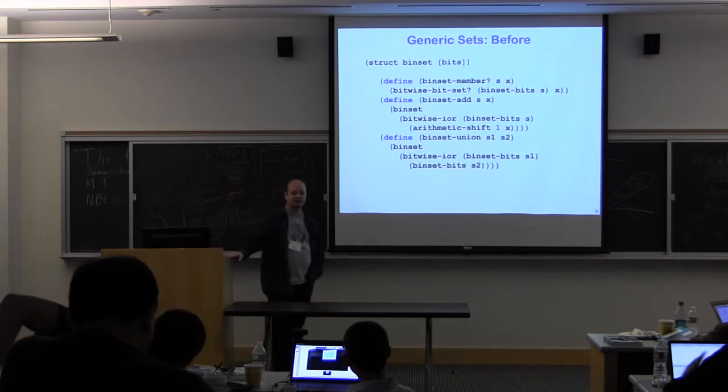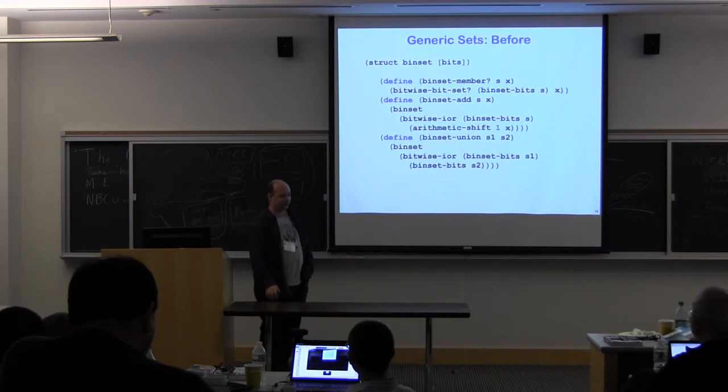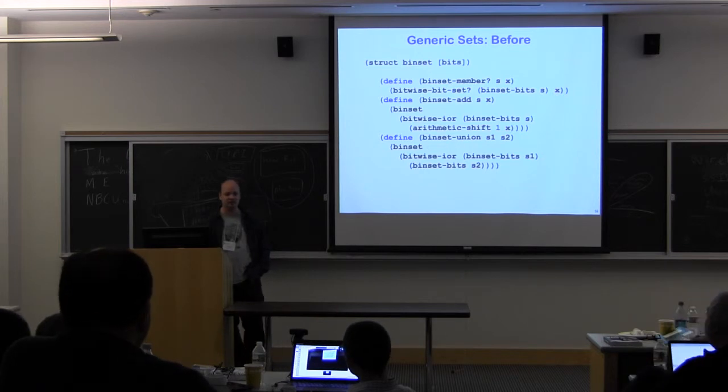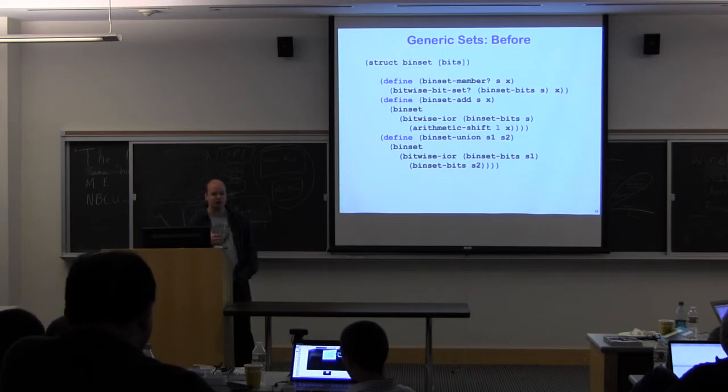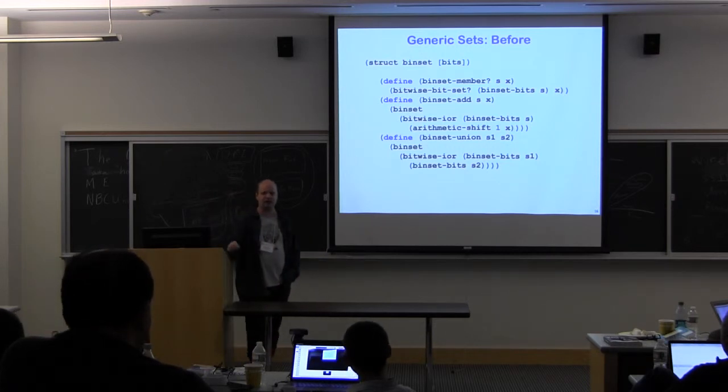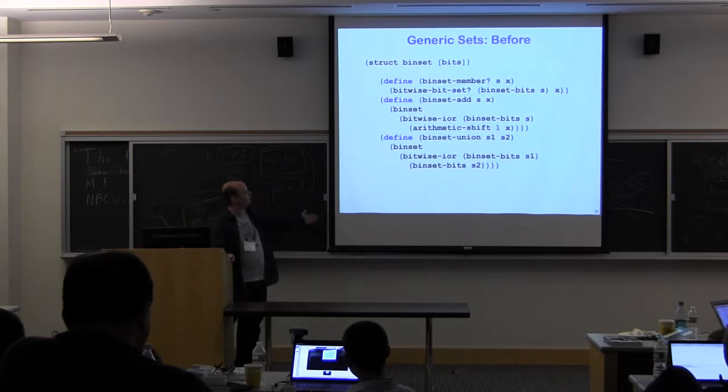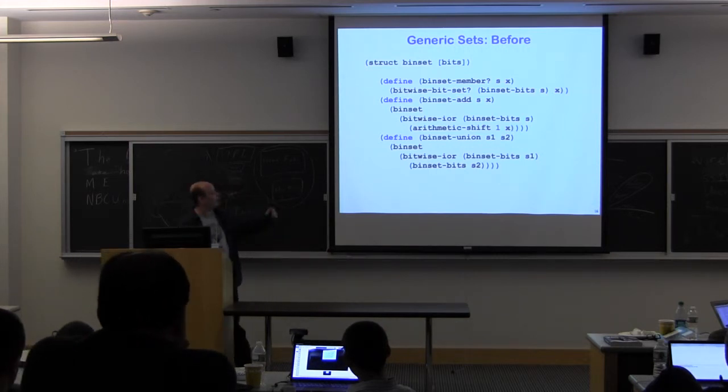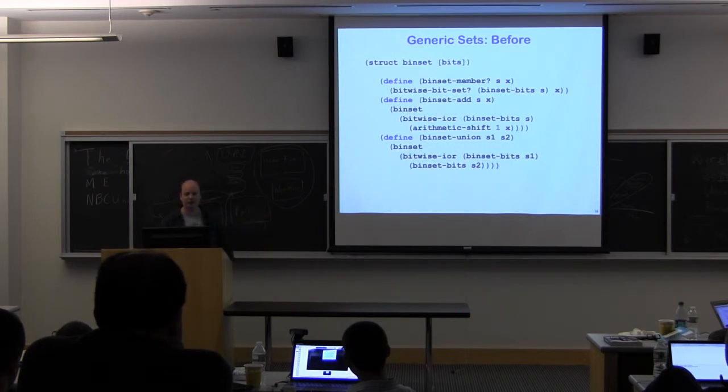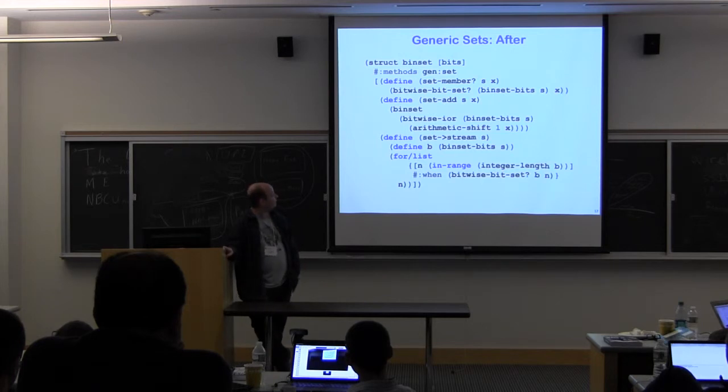We can go beyond hashes, and we can now create generic sets using the generic set interface. Previously, if we wanted to use something other than a hash table based set as a set, we couldn't. There's just no way to use set operations on anything other than these equal, eqv or eq hash tables. And you just had to define your own versions of member and add and union for whatever thing you want. Now if I want to use a natural number and the bits in it as a set of natural numbers, I can say make this an implementation of the set generic interface.